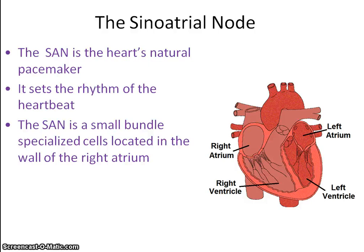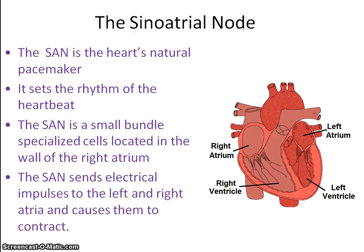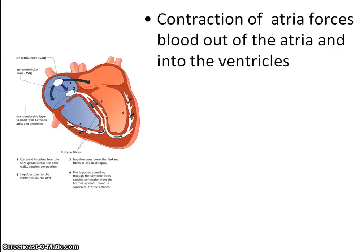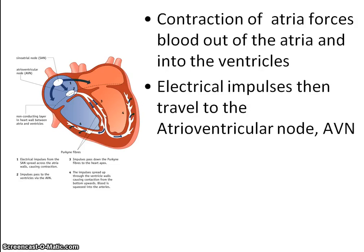The SAN is simply a small bundle of specialized cells located in the wall of the right atrium. It sends impulses throughout the atria — the left and the right atria — and they contract as a result. This forces blood out of the atria into the ventricles of the heart.